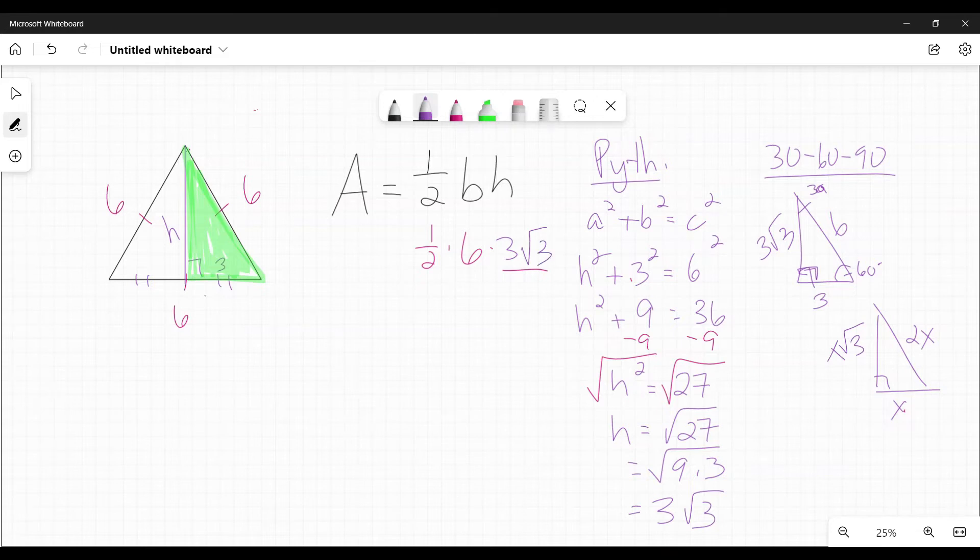And then I can multiply. 1 half times 6 is 3. 3 times 3 is 9. And the little square root of 3 stays as it is. And then, I always forget to put units, don't forget to put units, inches squared. As you can see, I got the same answer as in the previous step when I did this using the direct equilateral triangle area formula.